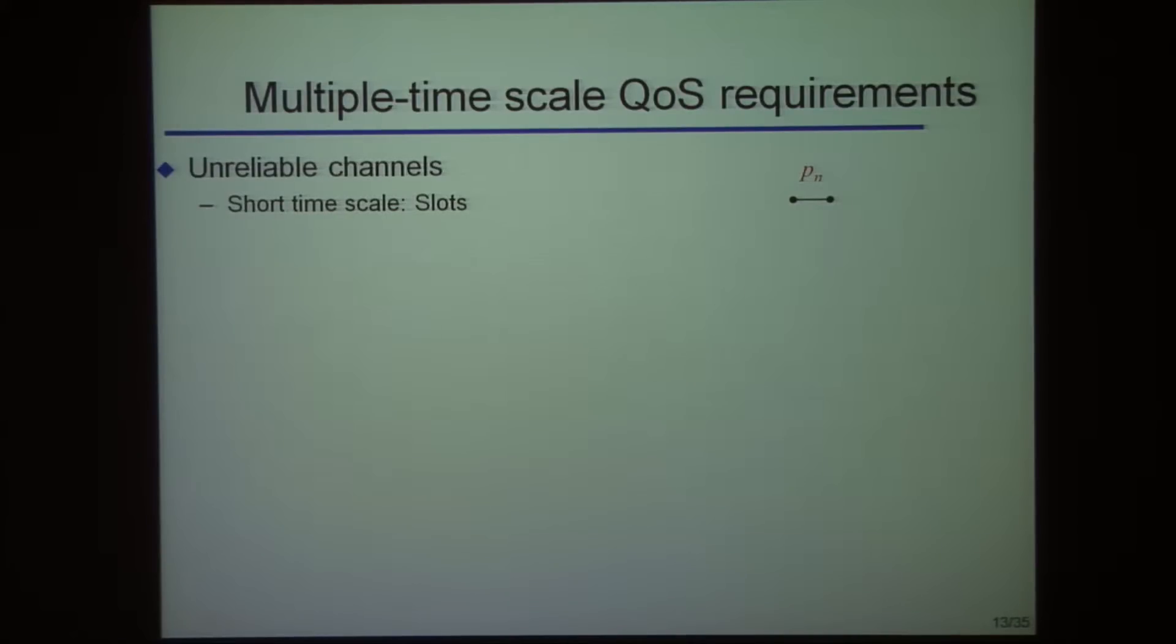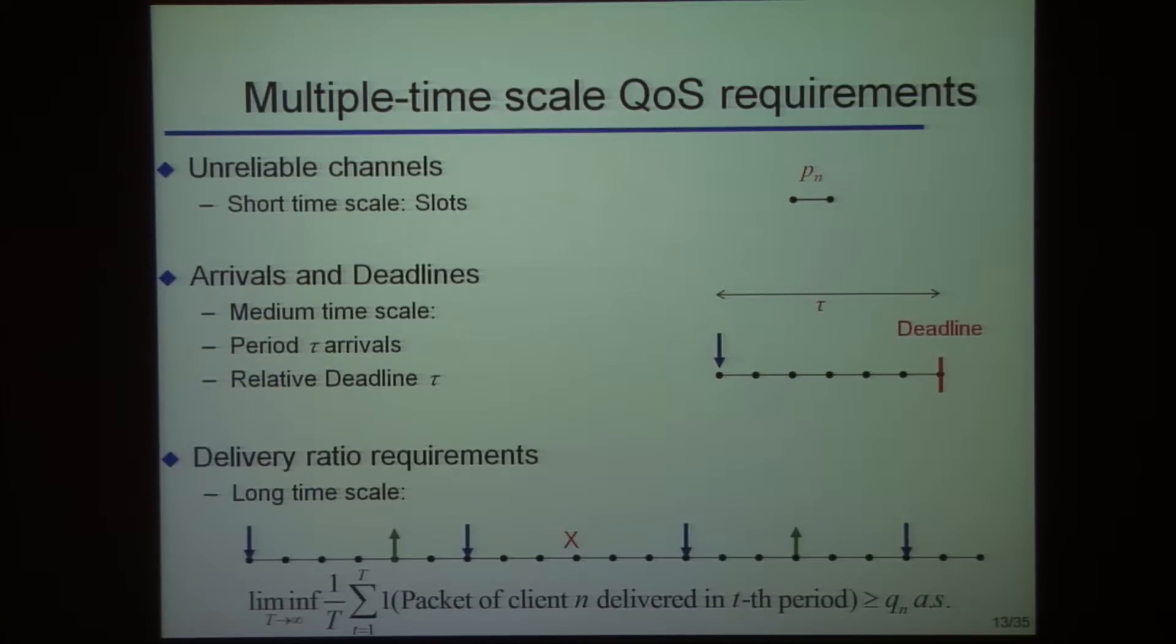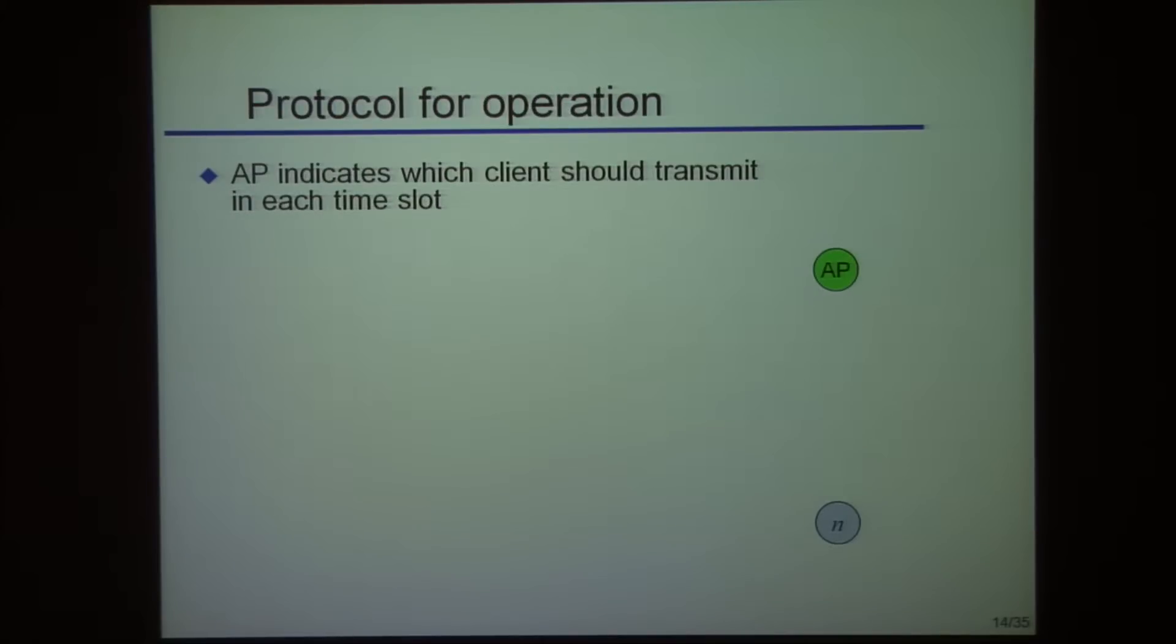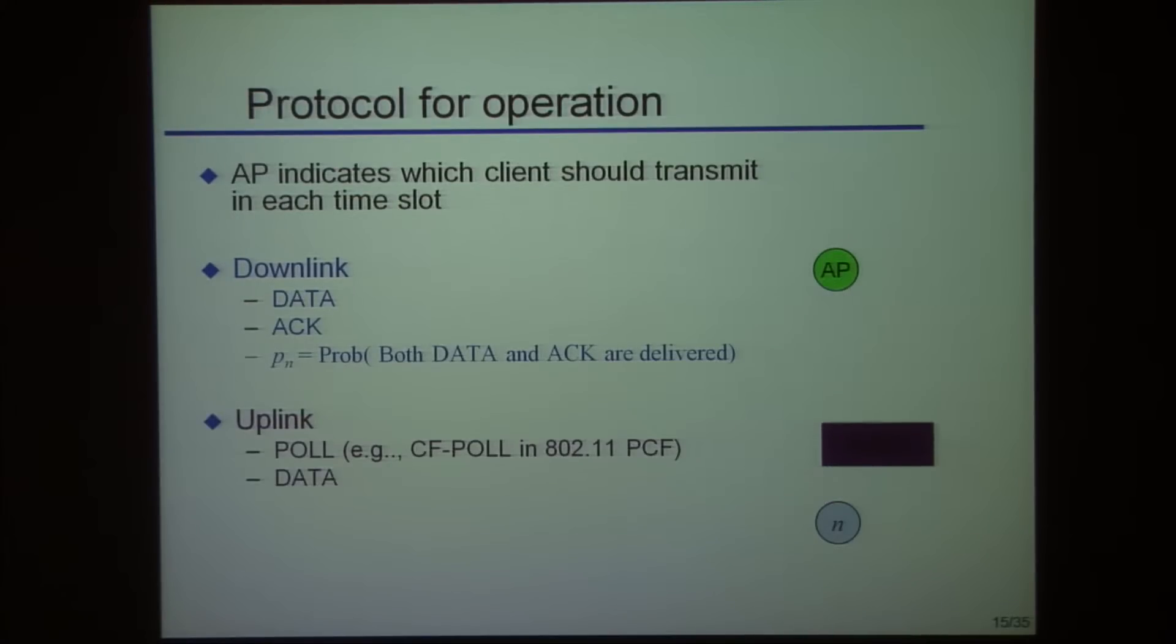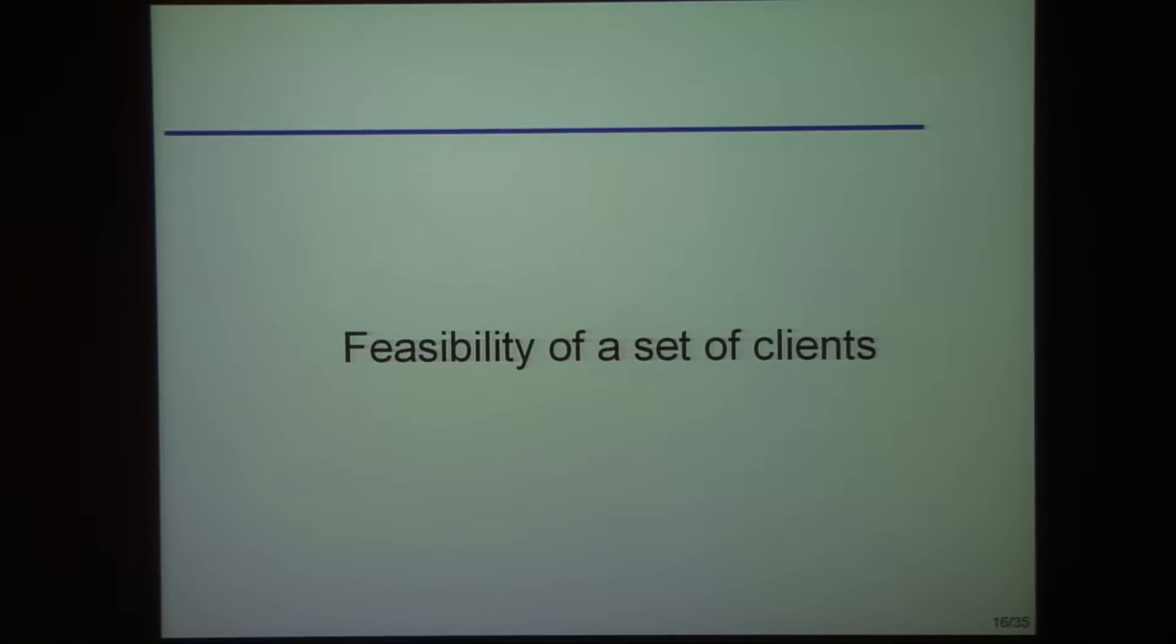What we're trying to do is work across different time scales. At the lowest level, we have slot level unreliability. Then we have a more medium term notion of arrivals and deadlines. And we have a longer term notion of throughput. We're trying to combine all these things. I'll skip the protocol here - you can implement this over Wi-Fi, it's not a problem.